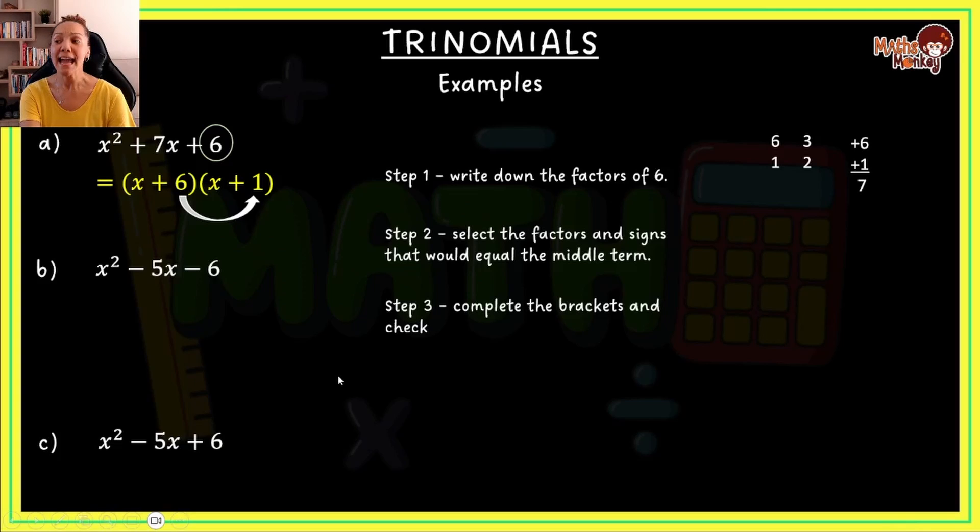Let's look at the second example. Here we've got x squared minus 5x minus 6. Again, we start off by writing down the factors of the constant. And again, in this case, it's 6. So we write down 6 and 1, 3 and 2. Those are my factors. Next, we need to find out which of these factors can actually give us negative 5.